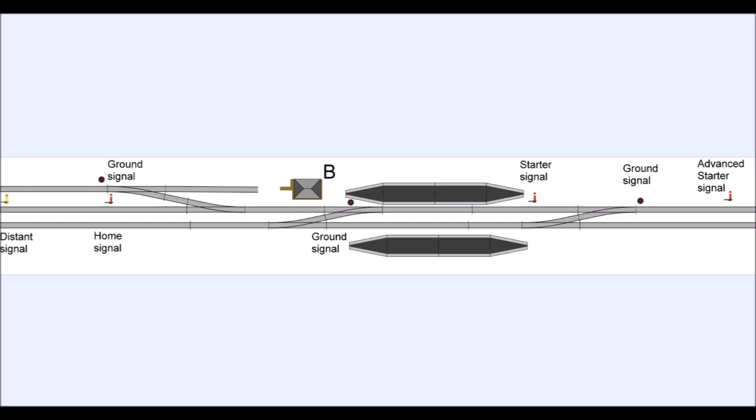Now B can go through the process of talking to signal box C, asking permission for that train to continue. When that train does have permission to continue, he can pull off the starter. He pulls off the advanced starter, and the train proceeds into the block section between B and C, and off onto signal box C.